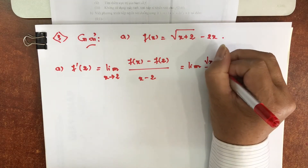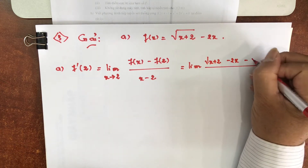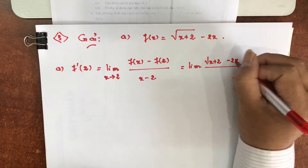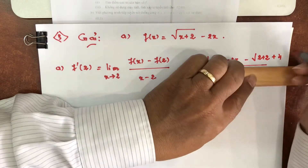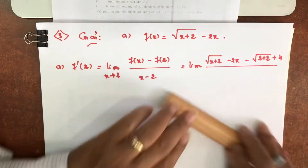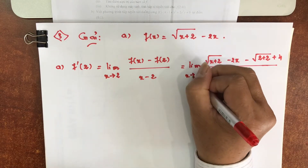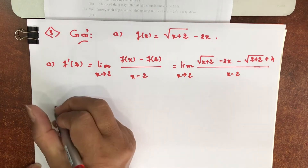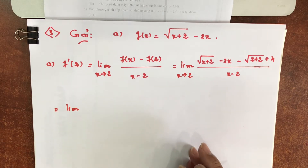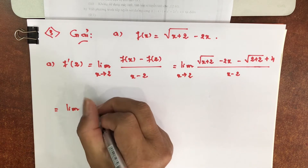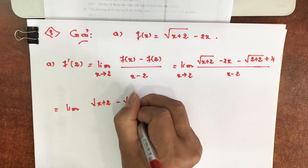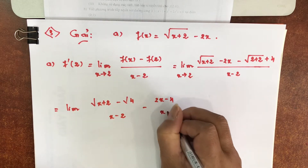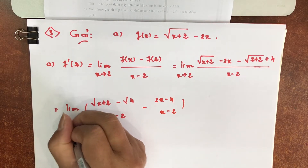F(x) thay bởi căn bậc 2 của (x cộng 2) trừ đi F(2) là căn bậc 2 của (2 cộng 2), tức là căn 4. Viết 2 cộng 2, trừ đi là cộng 2 nhân 2. Chia x trừ 2 khi x tiến về 2. Bằng giới hạn: căn bậc 2 của (x+2) trừ căn bậc 2 của 4 chia x trừ 2, trừ đi 2x trừ 4 chia x trừ 2, khi x tiến về 2. Căn bậc 2 của 4 thì các anh chỉ có thể viết 2 luôn cho rồi.